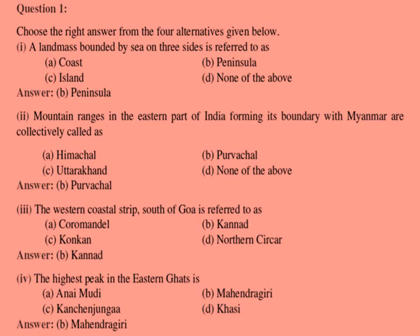Second: mountain ranges in the eastern part of India forming the boundary with Myanmar are collectively called — the answer is Purwachana.